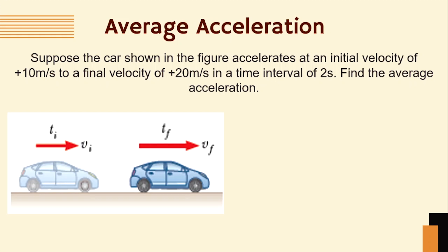To solve this, we just need to apply the formula. Average acceleration equals Δv over Δt, or that is 20 m/s minus 10 m/s divided by 2 seconds. The answer is equal to positive 5 meters per second squared.